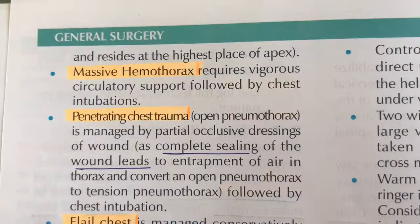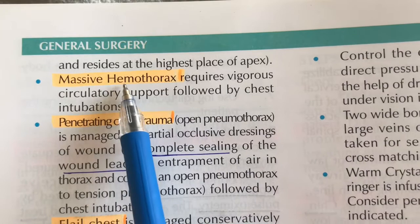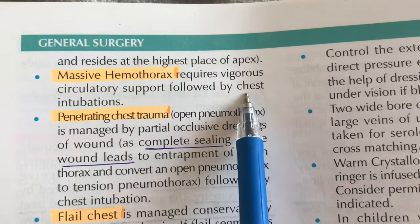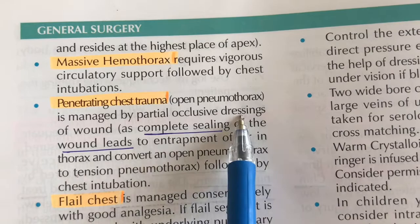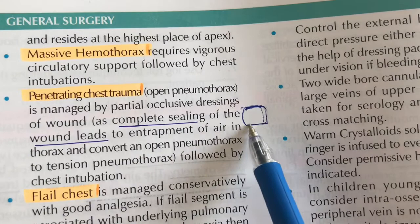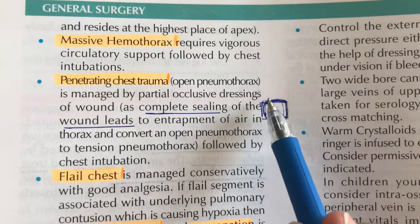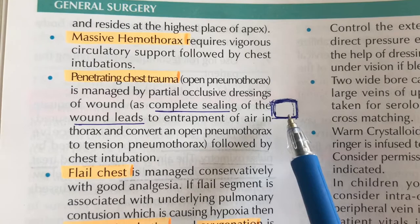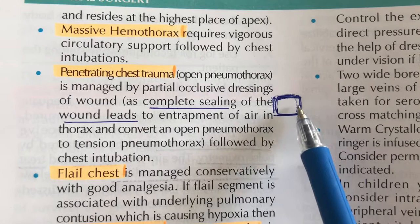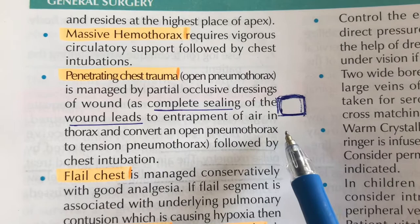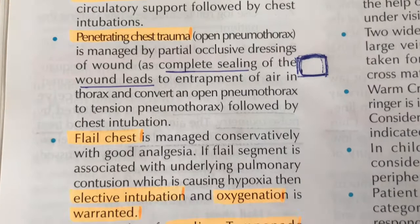For massive hemothorax — blood accumulating in the chest cavity — we intubate the chest to drain the fluid. For penetrating chest trauma, we apply a partial occlusive dressing. Using a rectangle analogy, we apply dressing on three sides, leaving one side open. On inspiration, the dressing seals inward, preventing air entry; on expiration, it moves outward allowing trapped air to escape.